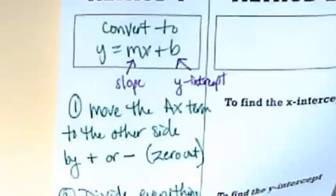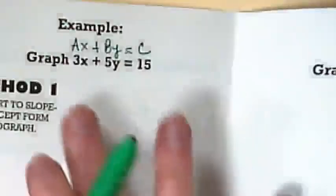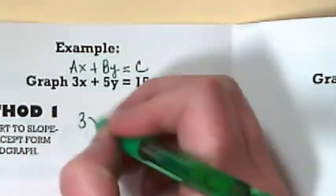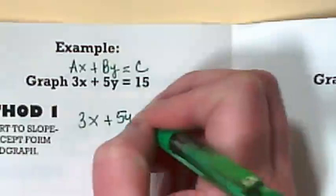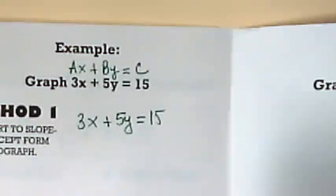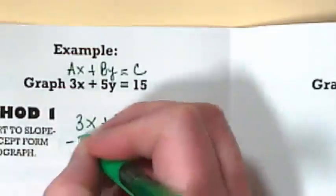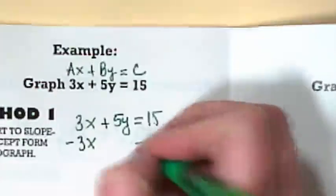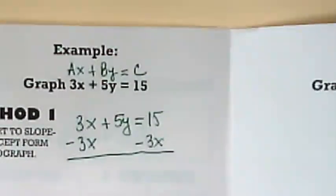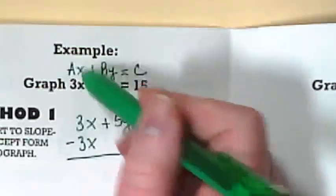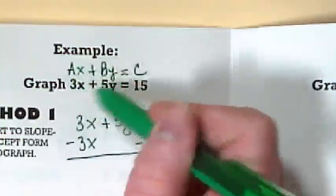So let's go back to our steps on the front. Step one, move the ax term to the other side by addition or subtraction. We're going to zero it out. So I'm going to rewrite the whole thing first. 3x plus 5y equals 15. And I'm going to zero this out by subtracting 3x from both sides because 3x is my ax set. Do you guys see what I'm talking about here with my steps?